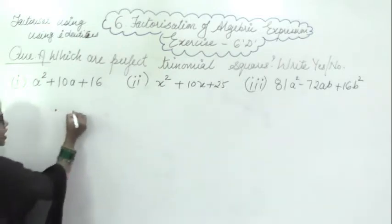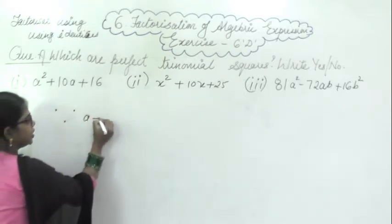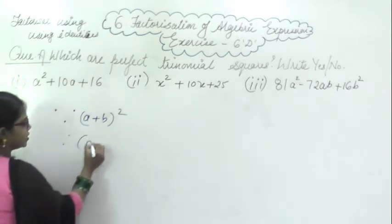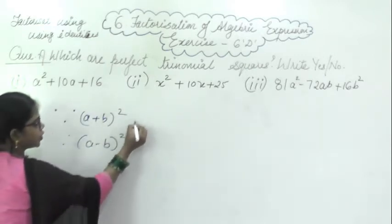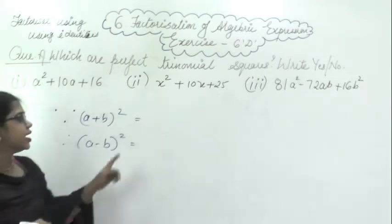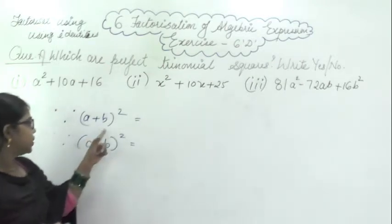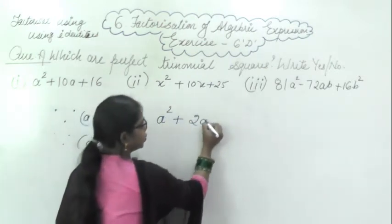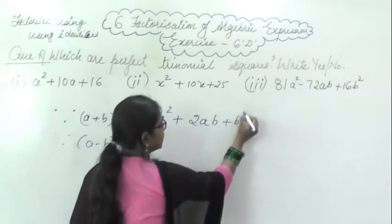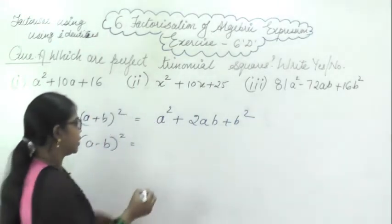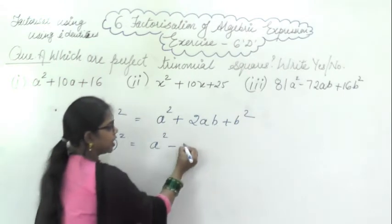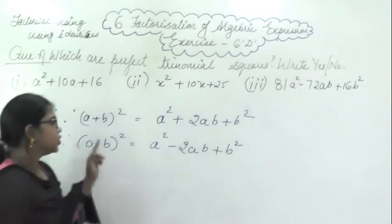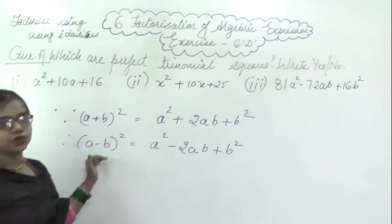Identities means you have studied the identities: A plus B whole square and A minus B whole square. Using these two identities we are going to solve this Exercise 6D. A plus B whole square is A square plus 2AB plus B square, and similarly A minus B square is A square minus 2AB plus B square. Using these two identities we are going to solve this.